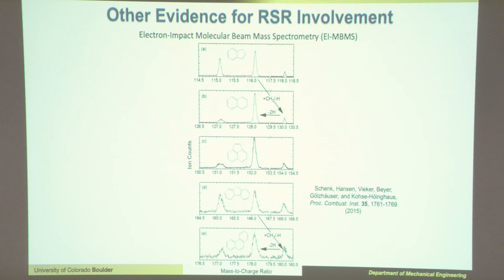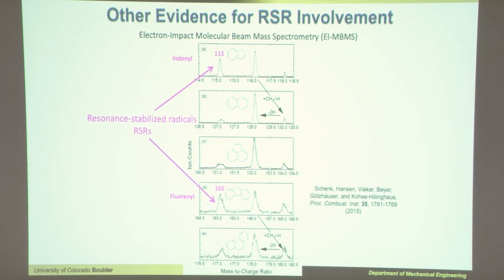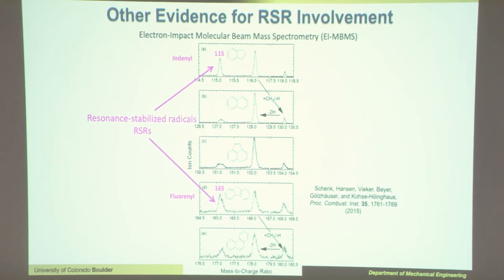Gas-phase measurements of RSR species in a flame show you can actually see RSRs in the gas phase — they're there. The question is how important they are in soot formation. Here's fluorenyl — we see this mass 165 peak constantly, it's huge, and it's one of the main peaks other people see too. If you're looking for a mechanism, this is a good mass to start with — what's happening with it, why do we always see it, and what is it doing?